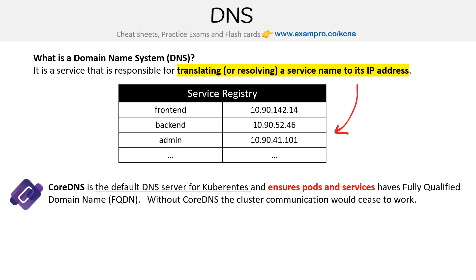CoreDNS ensures that pods and services have fully qualified domain names, FQDNs. Without CoreDNS, the cluster communication would cease to work because it just would not know how to resolve things.